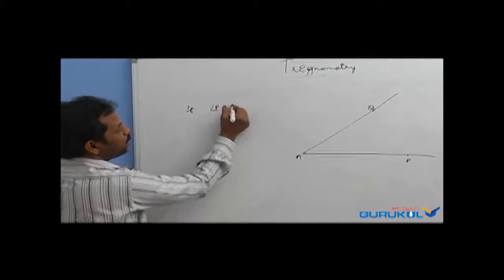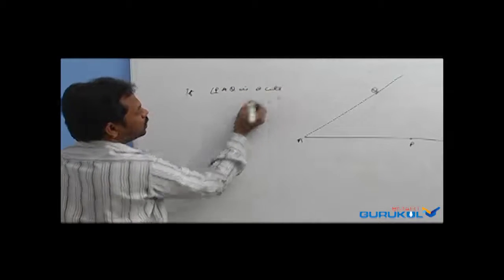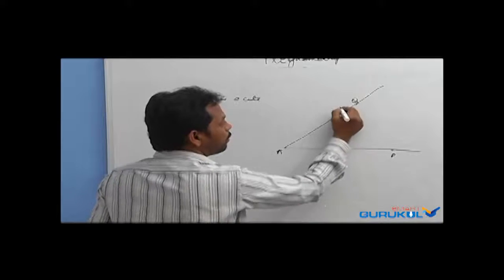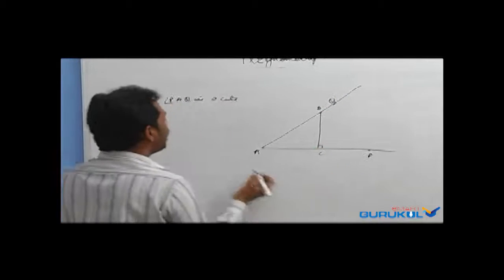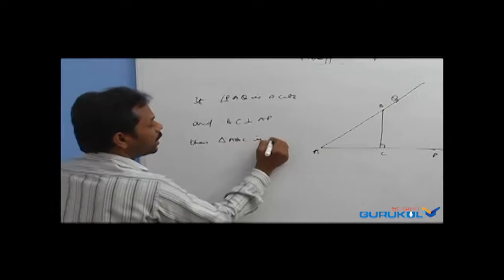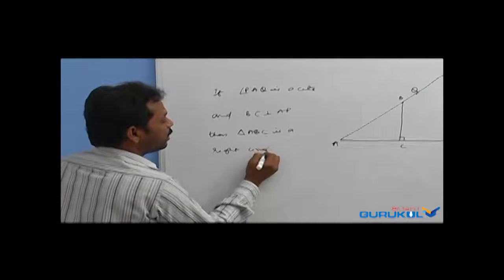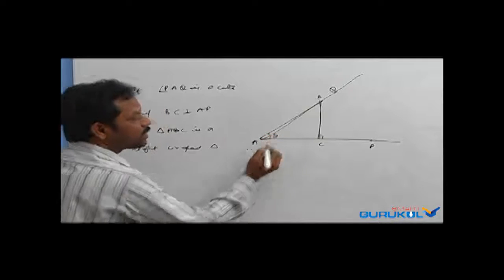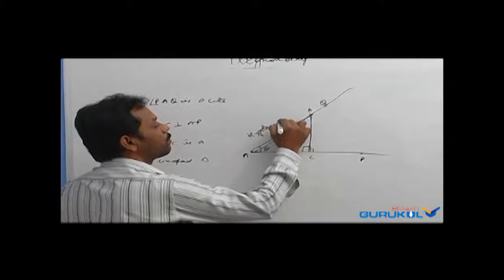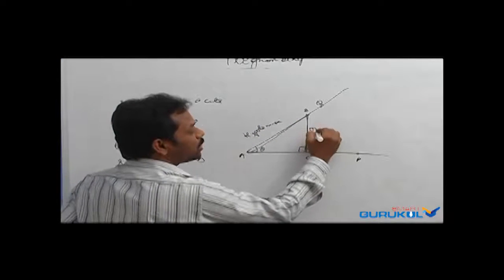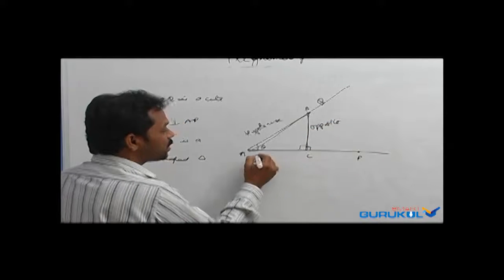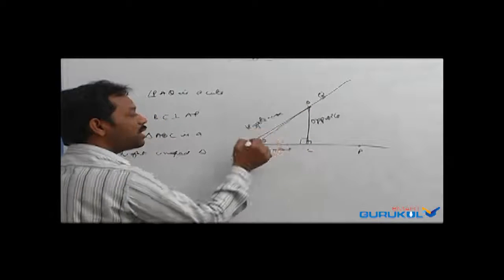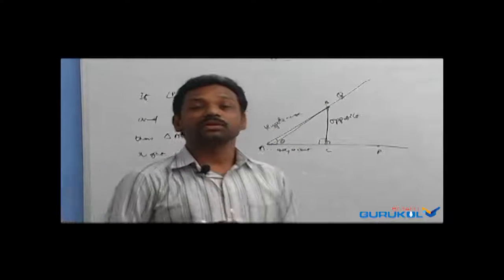If angle PAQ is acute, and BC is perpendicular to AP, then triangle ABC is a right-angle triangle. In this right-angle triangle, A is the acute angle. The side opposite to the right angle is the hypotenuse, the side opposite to angle A is the opposite side, and the base of the triangle is the adjacent side. From triangle ABC, we can derive six trigonometric ratios.